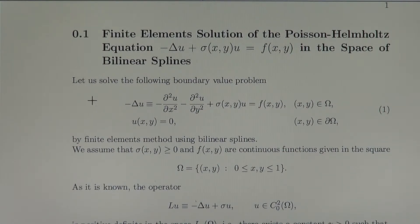Let us solve the following boundary value problem. The Helmholtz equation minus second derivative u with respect to x minus second derivative u with respect to y plus sigma u equals f in the domain omega, and on the boundary we have homogeneous boundary conditions on the boundary d omega.